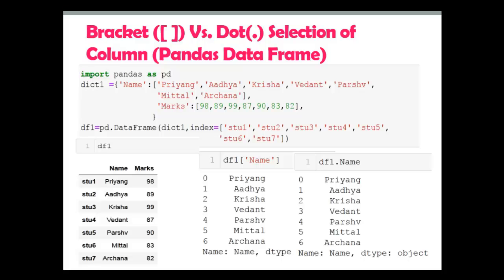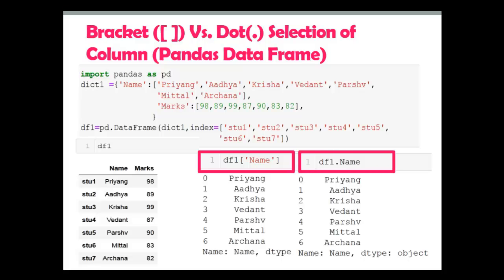As you can see here, I have selected the name column using bracket notation, and the same column selected with dot notation. You may be wondering which one to use. Dot notation is easy, handy, and fast to use. Let me take three cases and then you can decide which one to use.